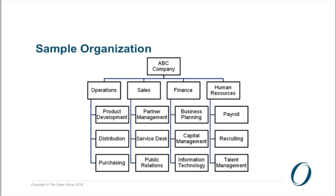Everyone would normally start with an organization chart as a starting map because you can find some degree of correlation between how you've organized the business and key business capabilities. But it's also important to follow the money — because following the money in the business plan or financial reports will highlight areas where there are key business capabilities that may not become apparent within the org chart. Doing your homework really means understanding the business strategy and a few other aspects of what the business is trying to do, so that when selecting those top 20 to 30 capabilities for the tier-one capability map, they're the right ones to be showing to your most senior stakeholders.